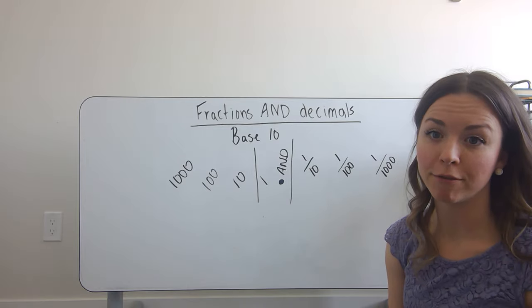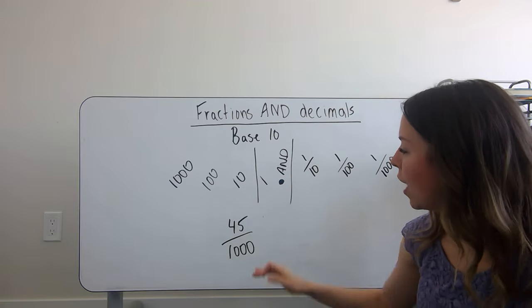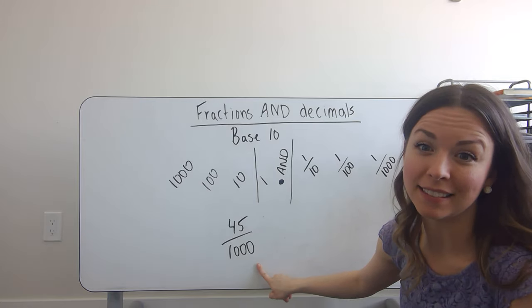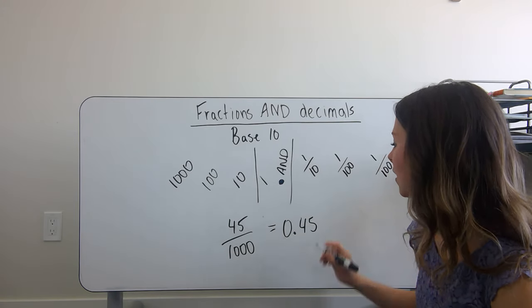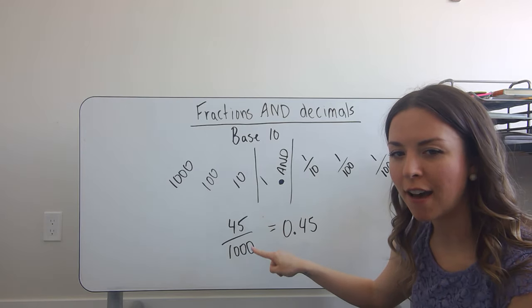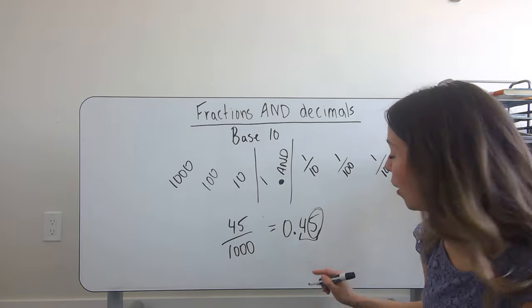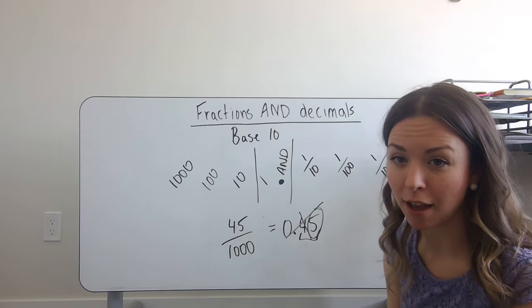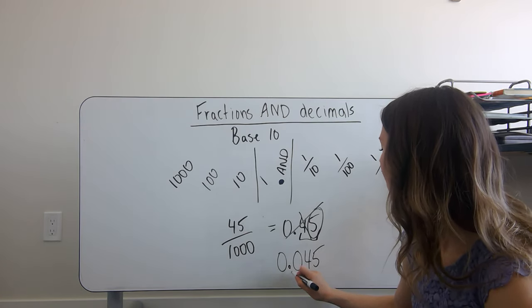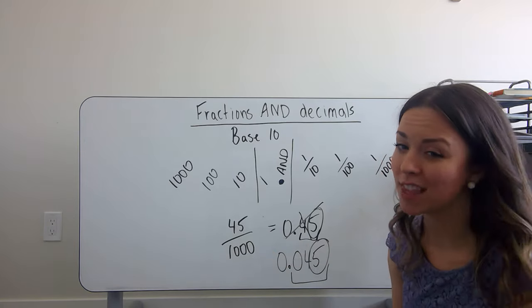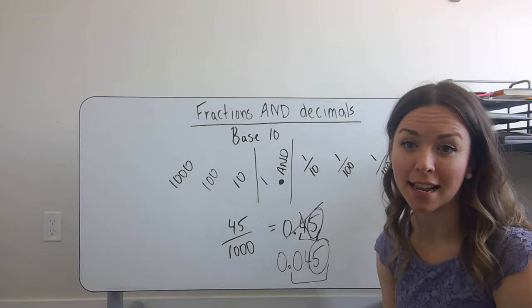We can do the same thing going from fractions to decimals. So I know that I have the number 45, and the denominator 1,000 is telling me the last digit has to be in the thousandths place. Let's check: 45 thousandths — say the number by itself, say the category — that says 45 hundredths. Uh-oh. It looks like I have to put a place value holder in the tenths place to make this the decimal I want. 45 thousandths is the same as 0 and 45 thousandths. So be really careful that your last digit ends up in the proper place value.